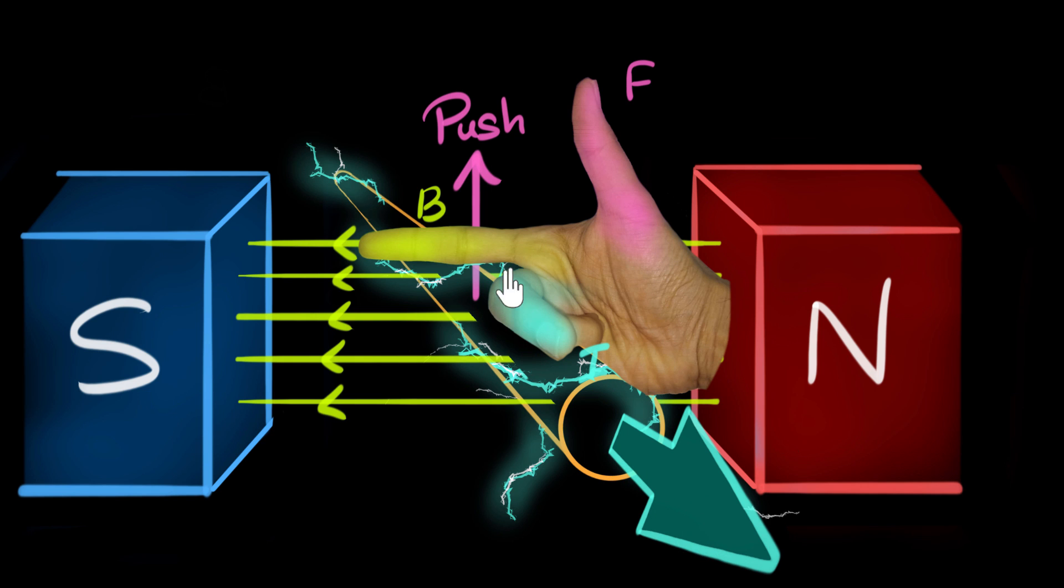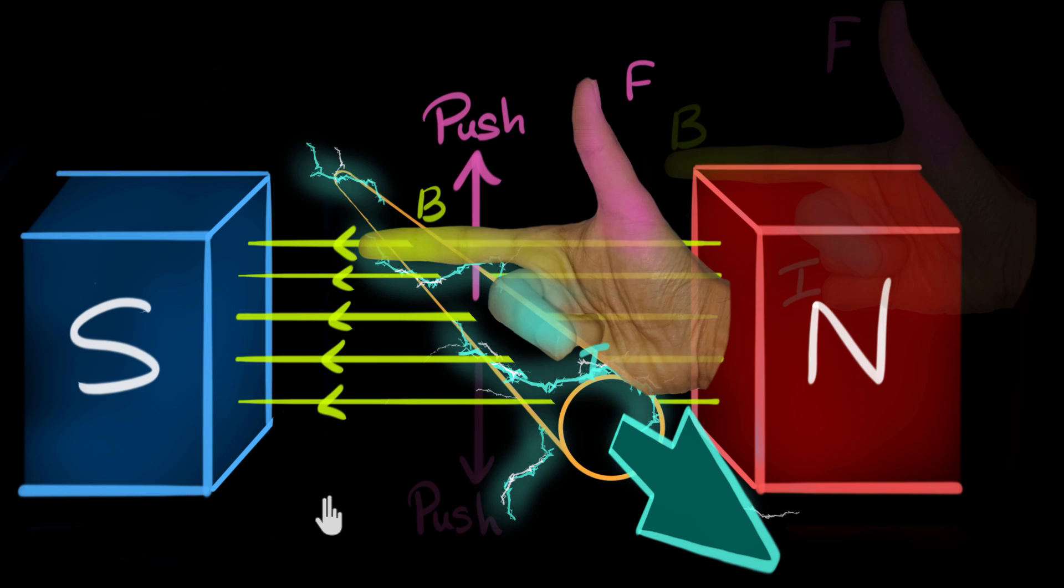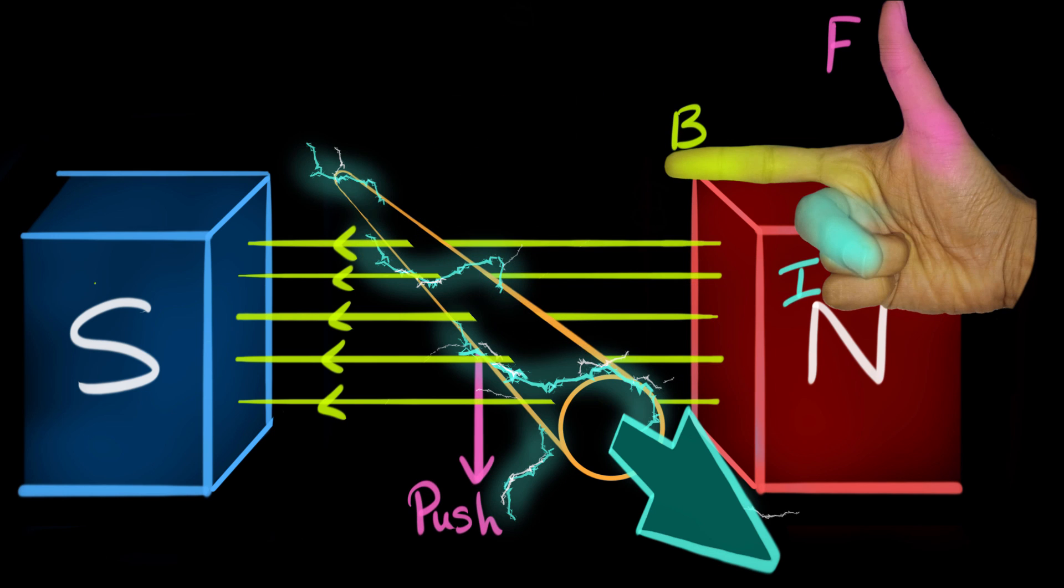And if you were to move this wire down, then this current direction would now reverse. Can you use your right hand generator rule one more time to convince yourself of this? Make sure that the forefinger is to the left, but this time make sure the thumb is pointing downwards and see what direction the middle finger points.